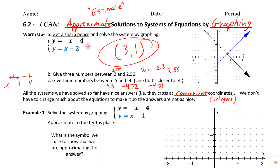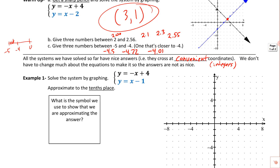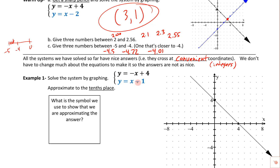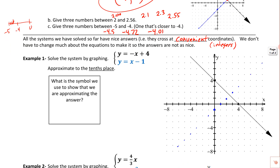Notice the black one is y equals negative x plus 4 — same as before — and now the blue one has changed from y equals x minus 2 to y equals x minus 1. So it's almost exactly the same. I'm going to quickly graph the black one: crosses at 4, slope negative 1. The blue one crosses at negative 1, slope is positive 1 — rise 1, run 1. You'll notice we just skipped right over that line, so these are going to cross at a little bit of a weird point.